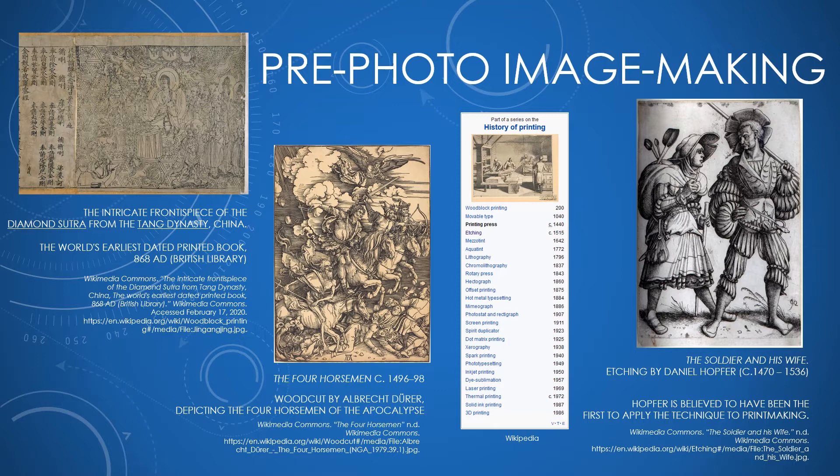That's from the world's earliest dated printed book at 868 AD. The woodcut towards the middle is from the German artist Albrecht Dürer, who is very well known for his woodcuts. This was a common practice until we invented the printing press in 1440, which was pretty revolutionary — people started mass producing books.